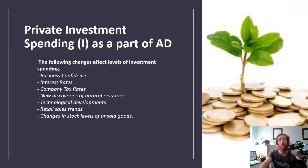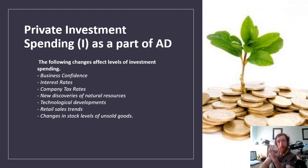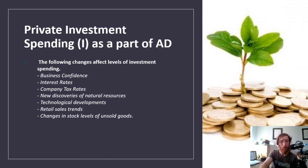Things that affect investment spending: business confidence — if businesses are confident they'll invest and expand, giving more aggregate demand. Interest rates — if low, more borrowing, more investment and expansion, more aggregate demand. Company tax rates — if higher, businesses won't invest as much, so aggregate demand will be lower. Discoveries of new natural resources — businesses will invest more if they know there are more resources to use. Technological developments — if businesses can be more efficient with new technology, they might invest in it. Retail sales trends — towards the holiday season, businesses may invest more. And changes in stock levels of unsold goods — if businesses have lots of leftover stock, they'll invest less.